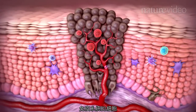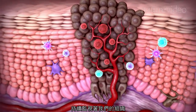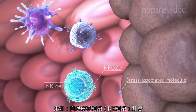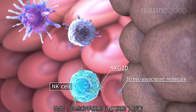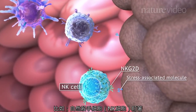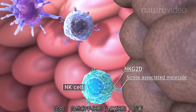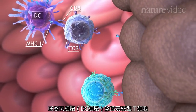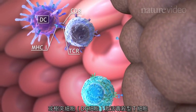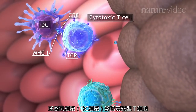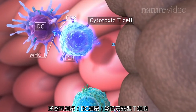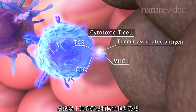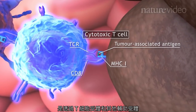The cells of the immune system are continuously monitoring our tissues. Natural killer cells, or NK cells, sense stress-associated molecules on damaged and cancerous cells. Dendritic cells, or DCs, activate cytotoxic T cells, which can then sense tumour-associated antigens using their T cell receptor and other co-receptors.